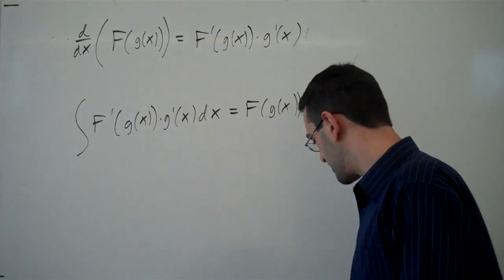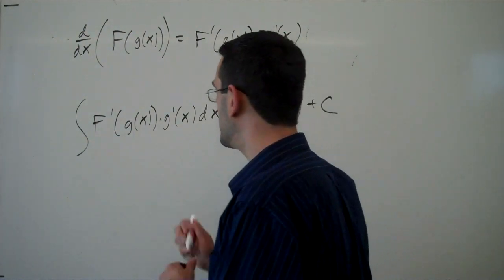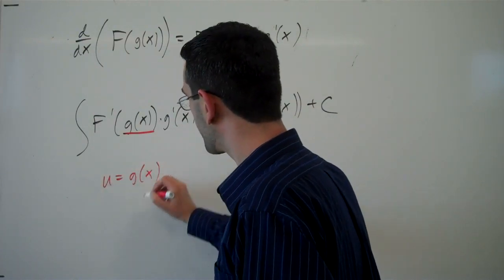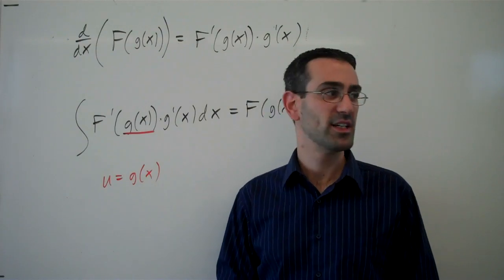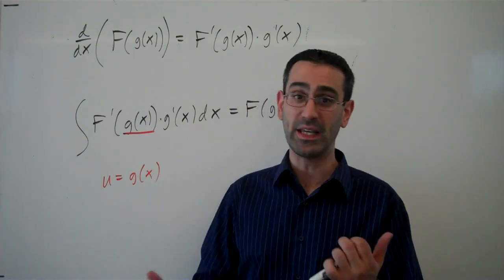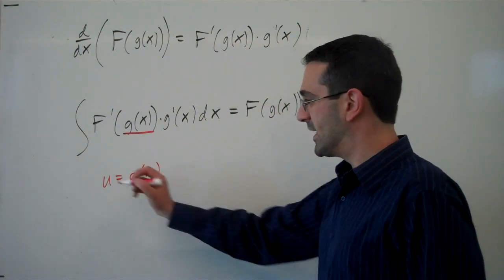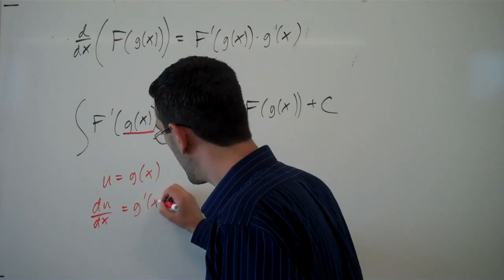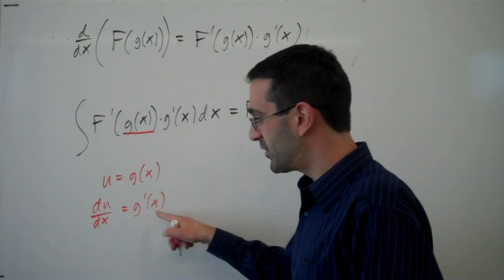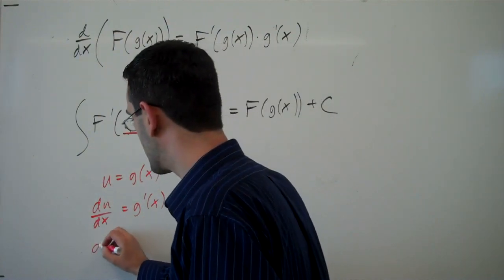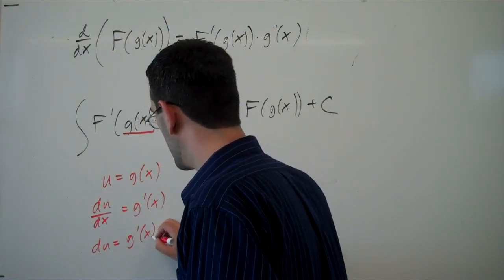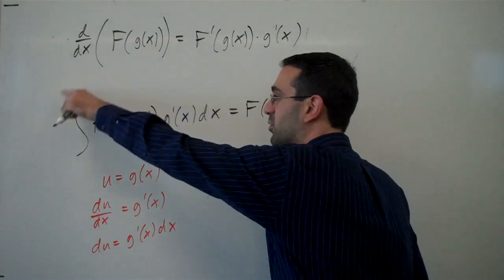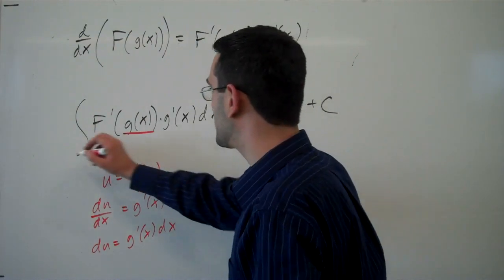We're going to make a substitution. We're going to call this g of x function by some simple name. We're probably going to call it u. You can use any letter here that you like. And then the derivative of u would be g prime of x. And if we treat this as differentials, we can multiply the dx up and say du is g prime of x dx.